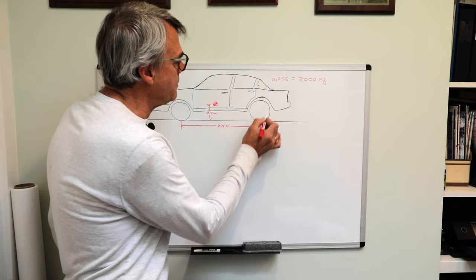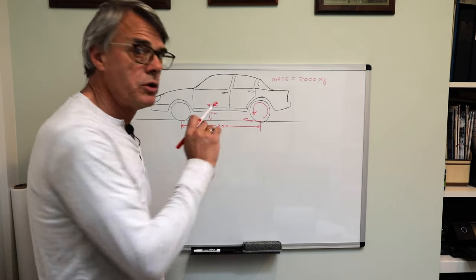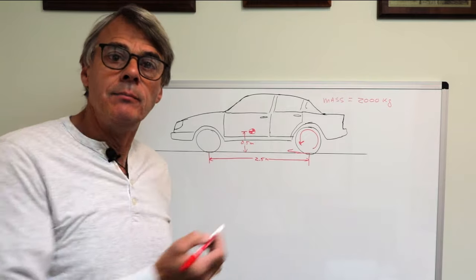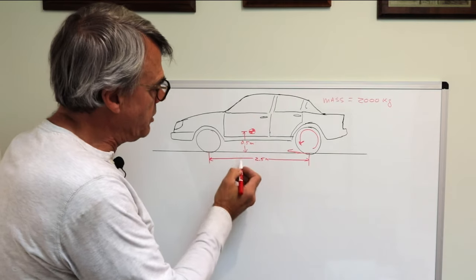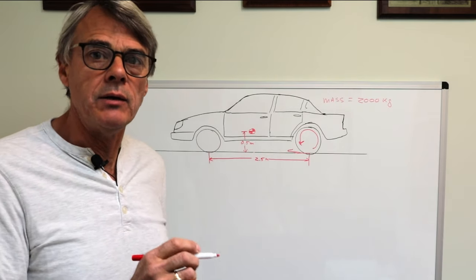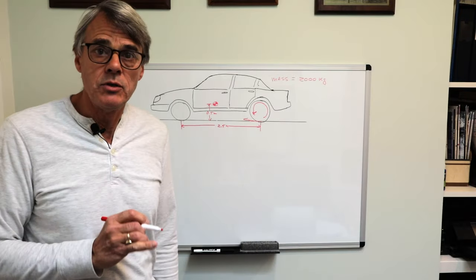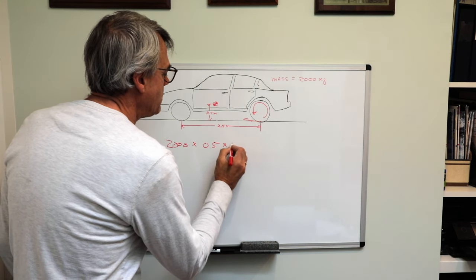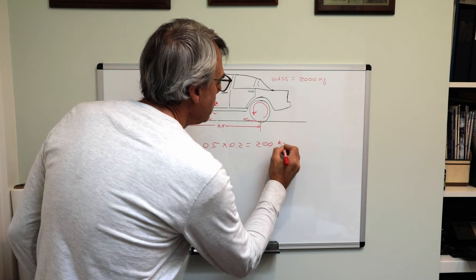As the engine rotates the wheels, there is a friction between the tires and the road surface that creates a force which wants to push the car forward. As far as the total vehicle is concerned, this force happens at the tire contact patch. Since the force is not in line with the CG, it creates a moment which is equal to the force times the perpendicular distance to the CG — in this case 0.5 meters. This moment is resisted by the wheels, which are 2.5 meters apart. Let's say we are accelerating at 0.2 G's. The moment will then be 2,000 times the distance to the CG times the acceleration, which equals 200 kilogram meters.